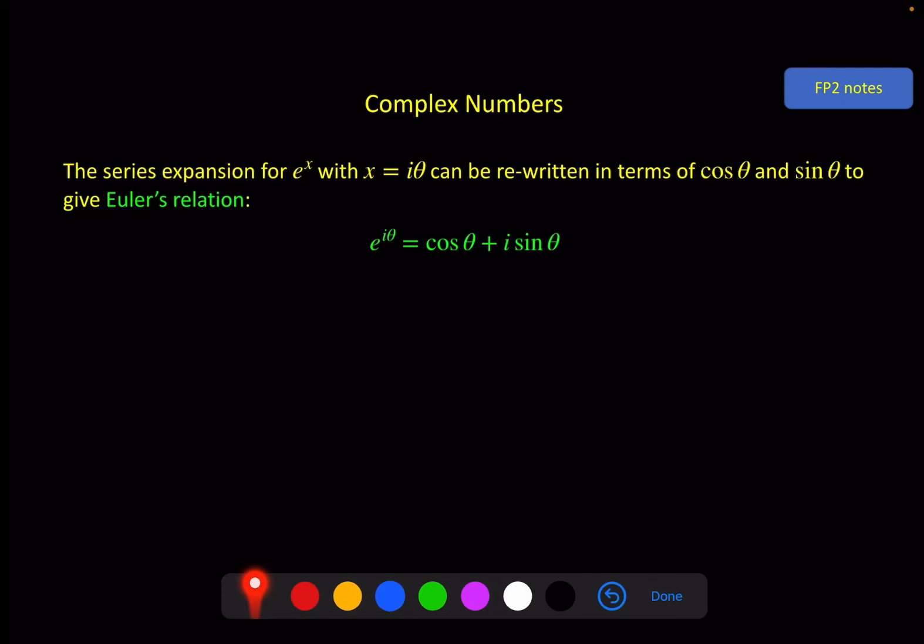As a very quick aside, this is where we get Euler's identity from, which is a very well-known equation. It's considered very beautiful. If you put theta equals π in here, you get e to the iπ and then cos of π is minus 1. Bring that on the other side.